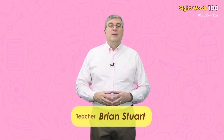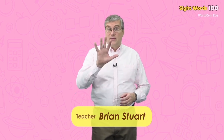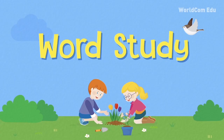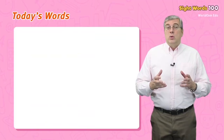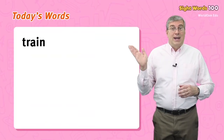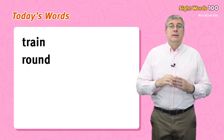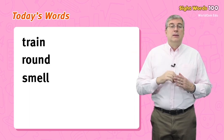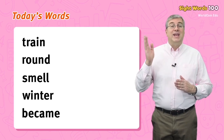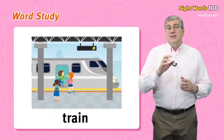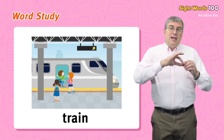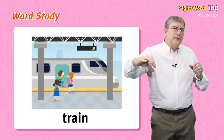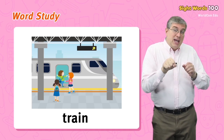Hello everybody, my name is Brian. Welcome to WorldCom Edu Sight Words Level 5. We are going to learn some easy words today. Are you ready? Let's begin. Today's words are: train, round, smell, winter, became. Let's start with train.